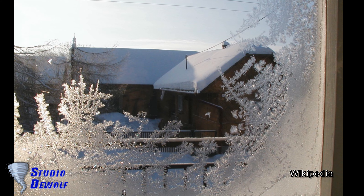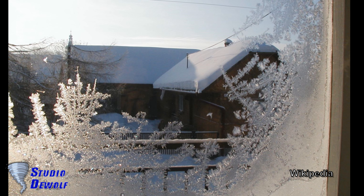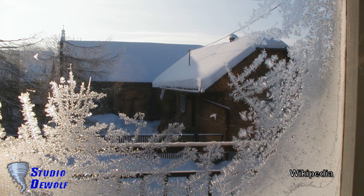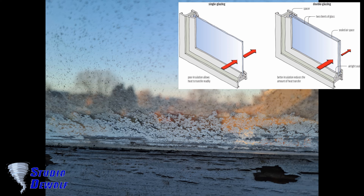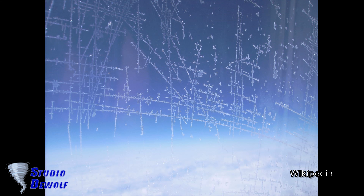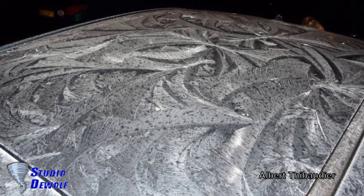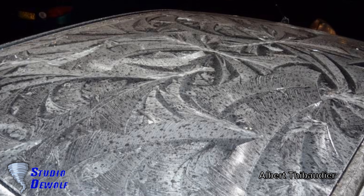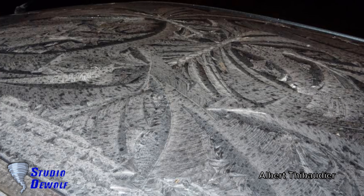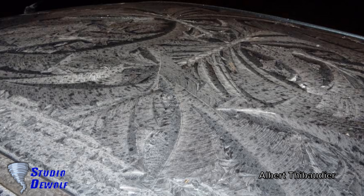You also find ice flowers on the windows of houses. But because most windows today are made of double glazing, the inside cools much less, so ice flowers are less common than in the past. Ice crystals regularly form against the windows of airplanes. The painted parts of cars can also form ice crystals when the ambient temperature drops below zero degrees Celsius.